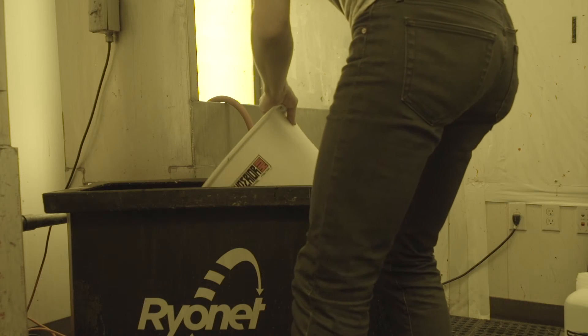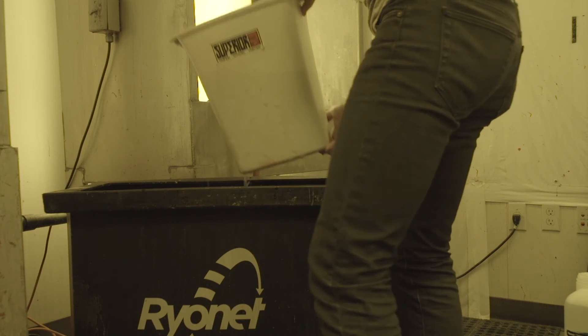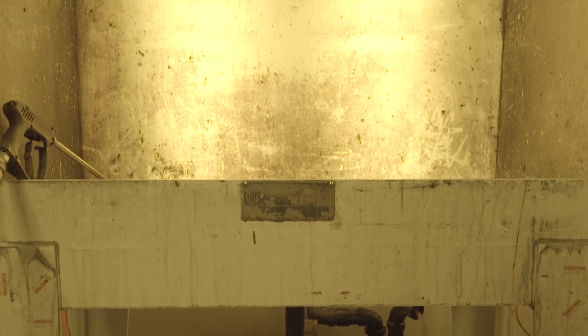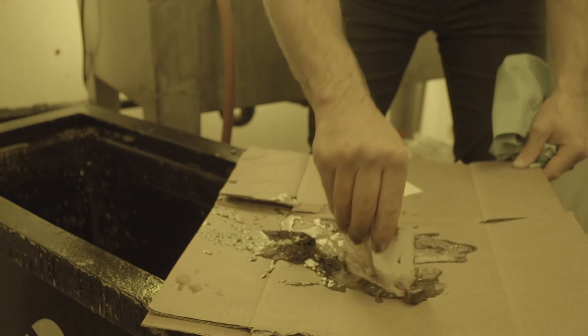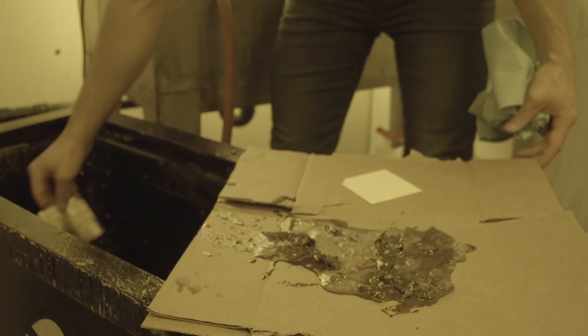To properly dispose of the dip tank solution once it's no longer effective, scoop or pour out the product through your filtration system or dispose in a rock pile. Scrape out the solids at the bottom and let them dry on cardboard and then dispose of them in solid waste.